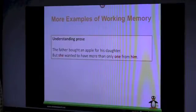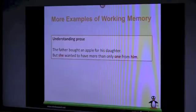Other examples would be understanding text. For example, a sentence like 'the father bought an apple for his daughter,' and the next sentence could say 'but she wants to have more than only one from him.' In the second sentence, we have to know that 'she' refers to the daughter, 'one' refers to the apple, and 'him' refers to the father.